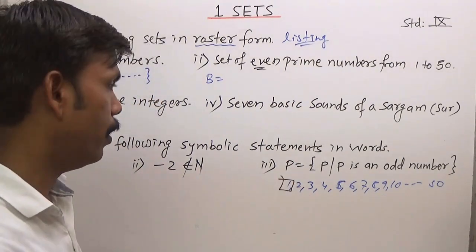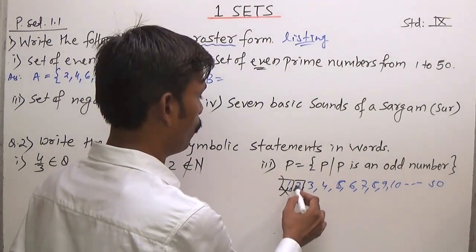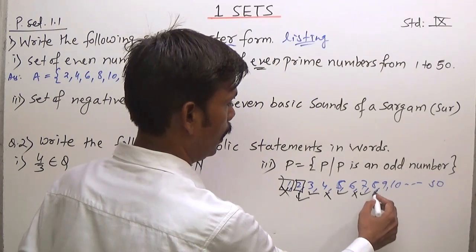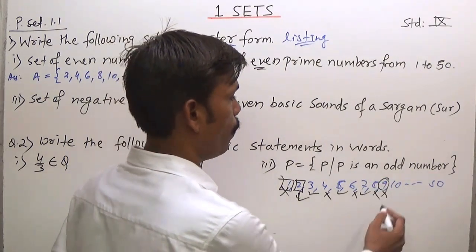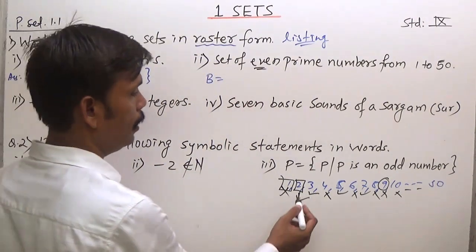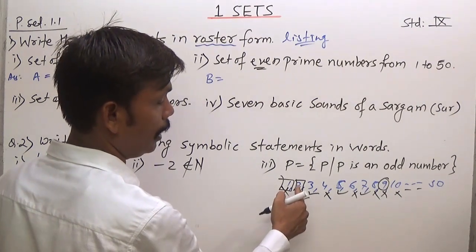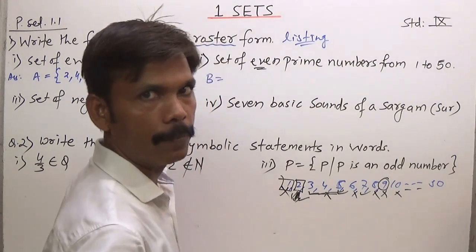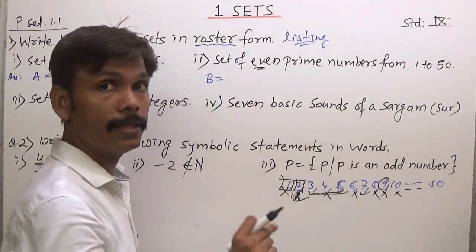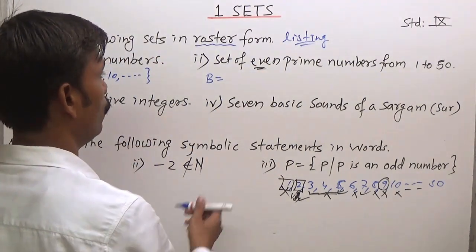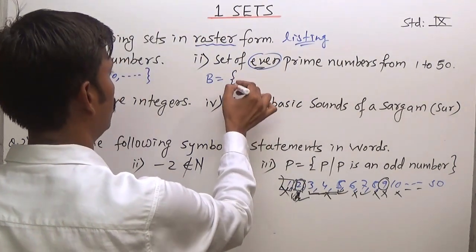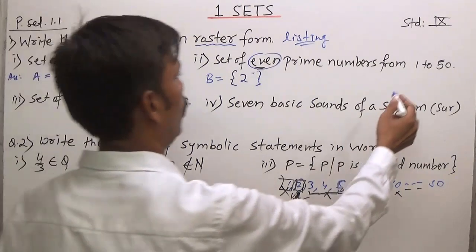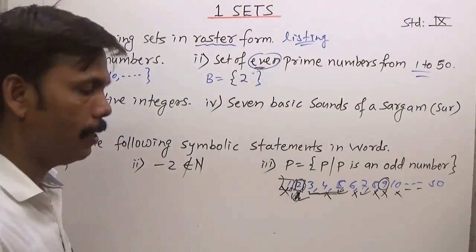1 is neither prime nor composite, so 1 is excluded. Now, 9 is divisible by 3, and 10 is not prime. So 2 is the only even prime number. Other prime numbers are odd numbers. It is not that all odd numbers are prime. The even prime number is just 2 — whether the range is 1 to 50 or 1 to 1000. So set B = {2}. This is your listing method.